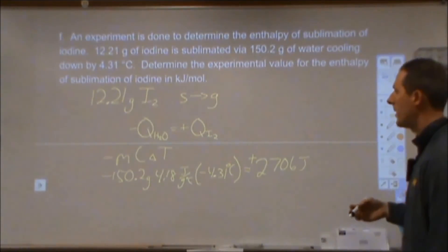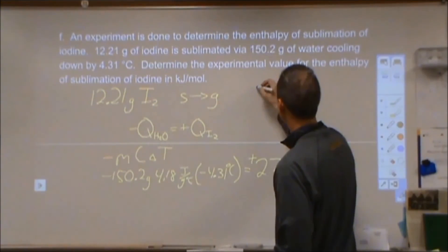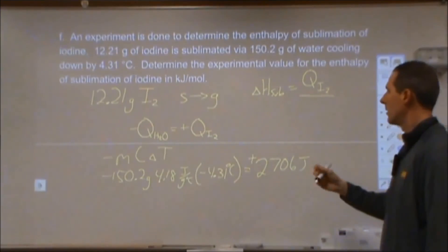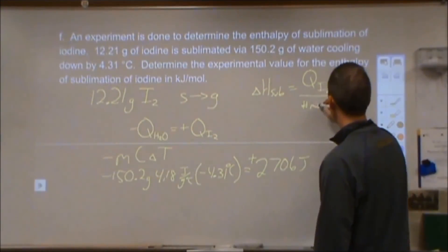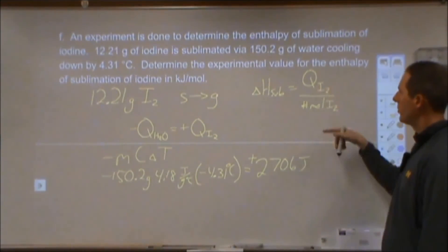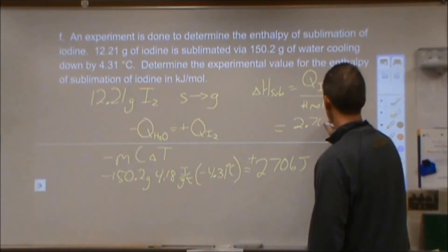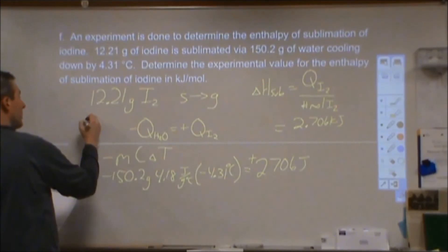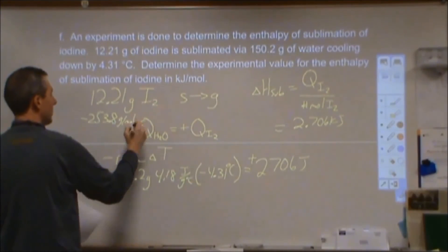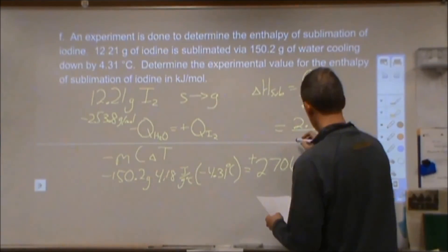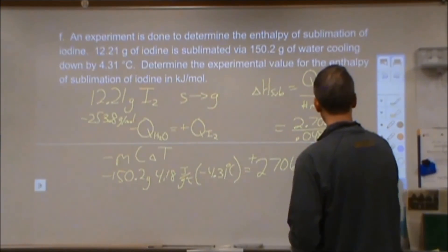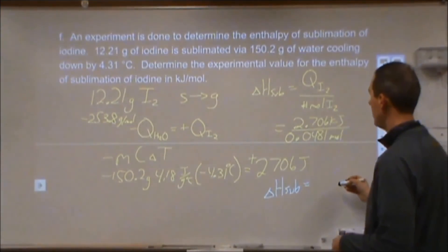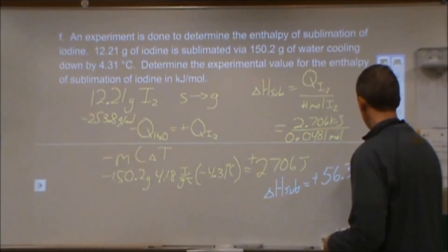The iodine experiences a positive increase in enthalpy. The enthalpy of sublimation equals the energy gained by the iodine divided by the number of moles of iodine. Converting 12.21 grams of I₂ using the molar mass of 253.8 g/mol gives 0.0481 moles. So the enthalpy of sublimation equals 2.706 kJ ÷ 0.0481 mol = positive 56.3 kJ/mol.